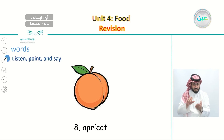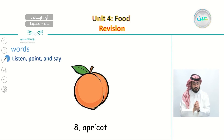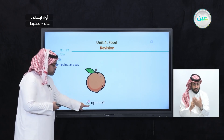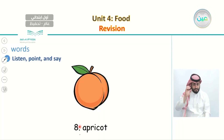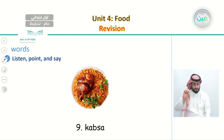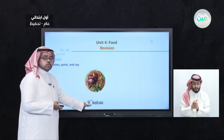Word number eight is apricot. Say with me: apricot. So this is an apricot, and this is how we write the word apricot. And number nine — finally, we have the word capsa. Say with me: capsa. This is a capsa, and this is how we write the word capsa.